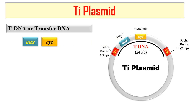The second gene it contains is the cyt gene, that is the cytokinin gene. Due to the aux gene and cyt gene, this Ti plasmid forms its own auxin and cytokinin, causing overproduction of auxin and cytokinin in the plant, which ultimately causes cancerous growth. Another gene present in the Ti plasmid is the ocs gene — the octopine synthetase gene — which makes certain opine compounds required for the growth of Agrobacterium tumefaciens.